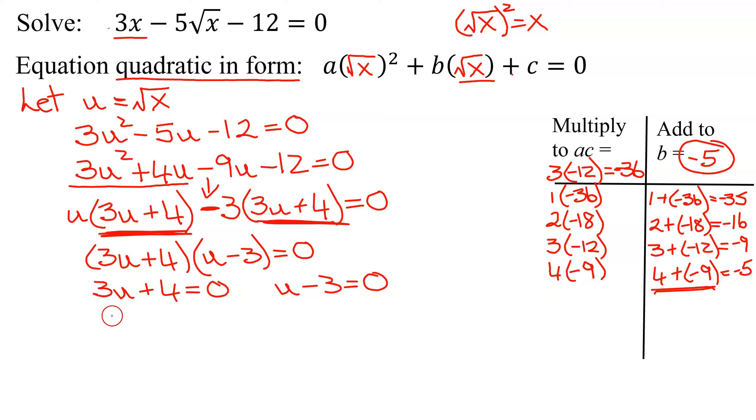On the first one, subtract 4 from both sides. 3u equals negative 4. Divide both sides by 3. You get u equals negative 4 thirds. And the second one, u minus 3 equals 0. Add 3 to both sides. You get u equals 3.